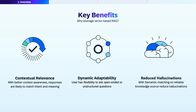User querying in an application leveraging Vector-based RAG techniques will have three main benefits. First is contextual relevance: with the help of vector embeddings, the application has better context awareness, and responses are likely to match the user's intent and semantic meaning. Second is dynamic adaptability: the application can understand users' intent from the query, giving users flexibility to ask open or unstructured questions while still getting good quality results. Third is reduced hallucinations: since the LLM response is based on reliable knowledge sources, it reduces the risk of hallucination. These advantages encourage developers to leverage RAG when building applications where users query specific knowledge sources.